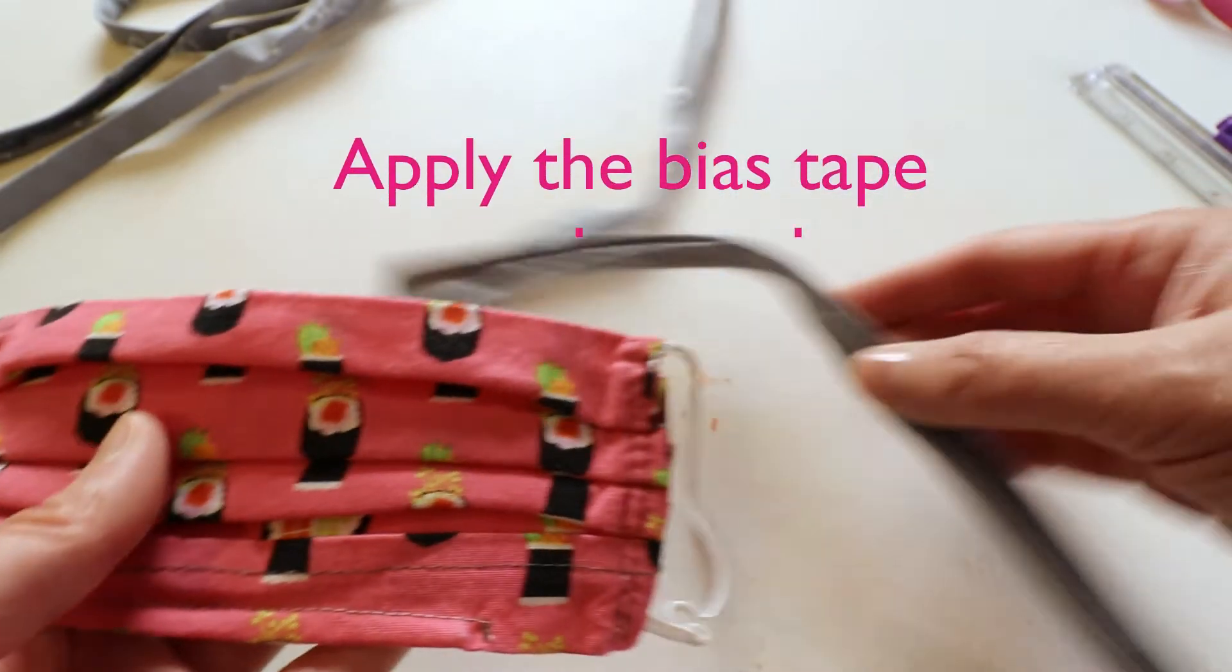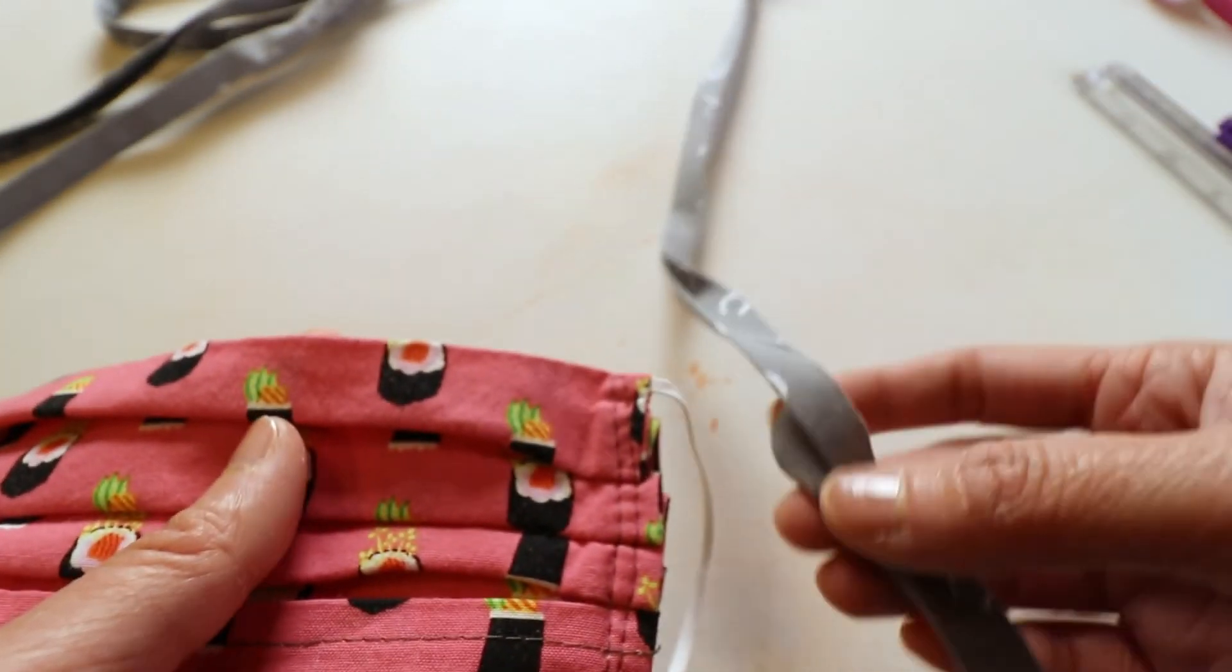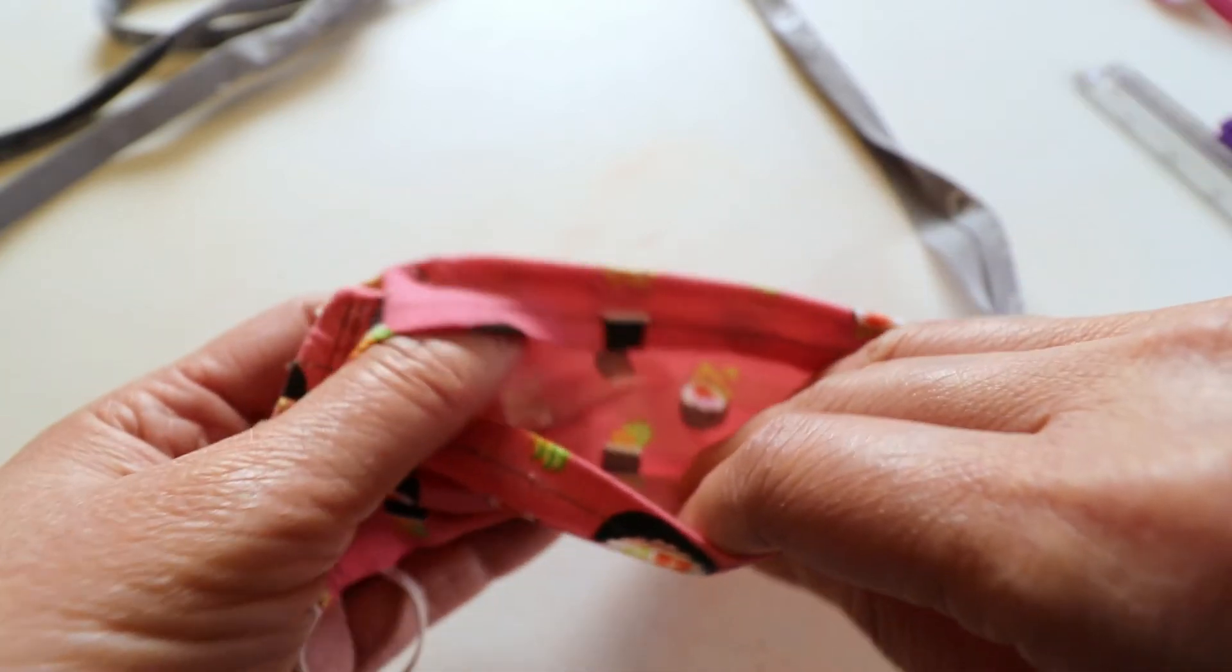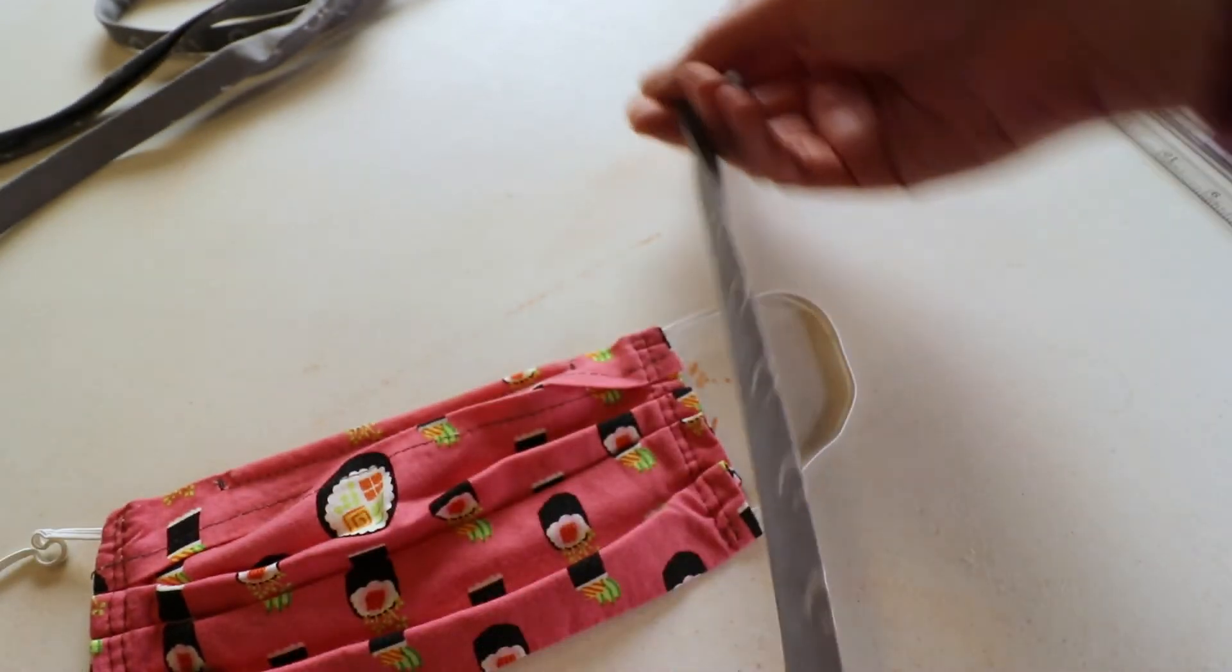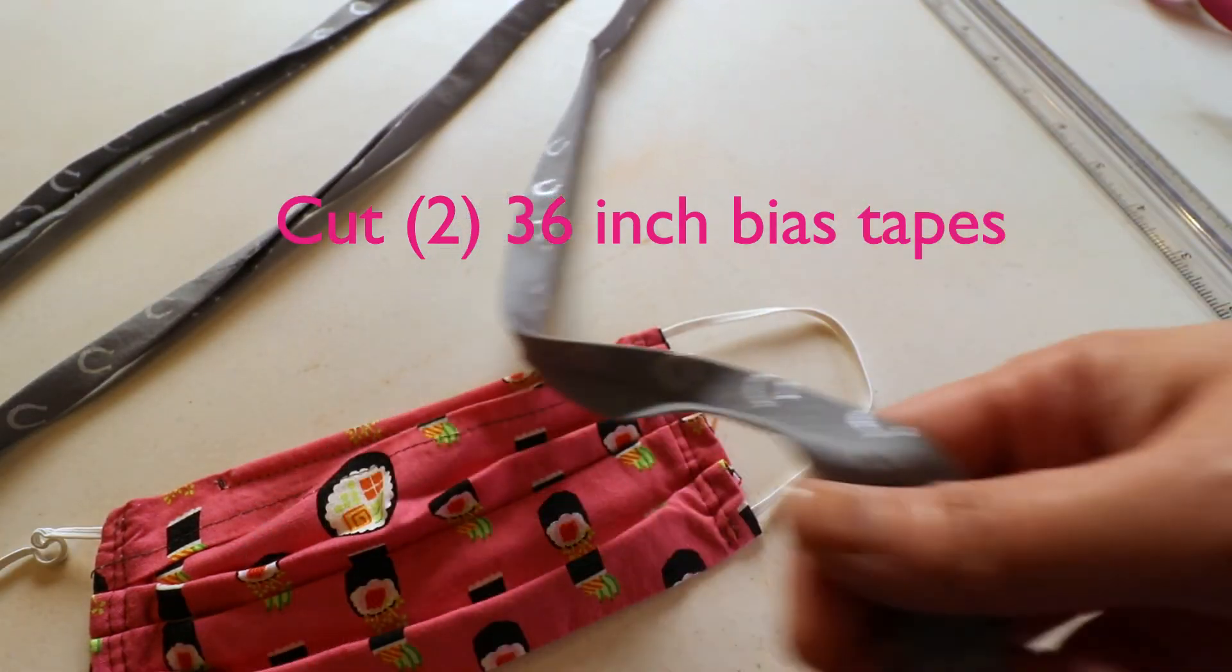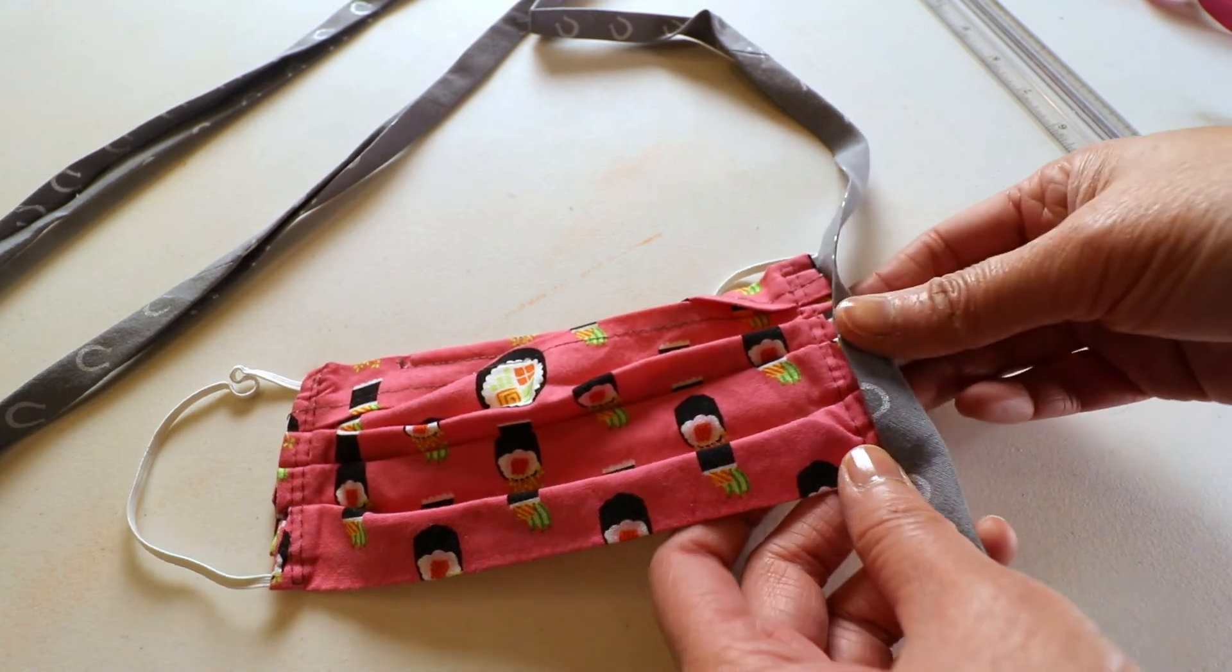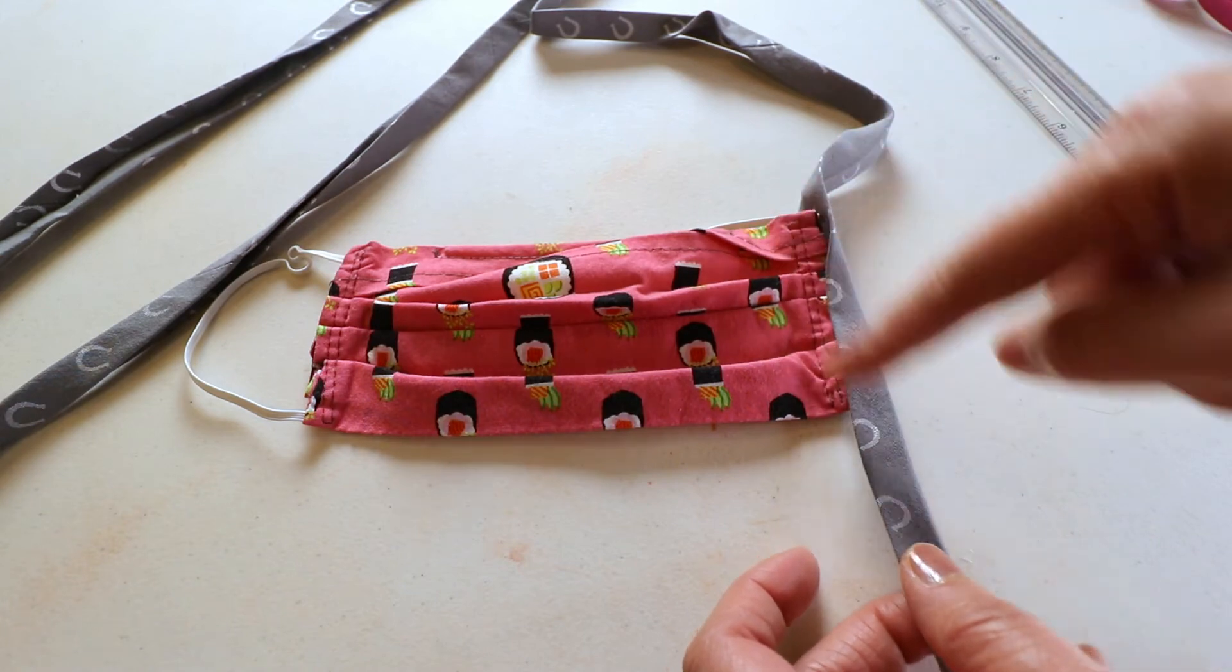So how do we use a bias tape for our mask pattern? We can use this to replace the elastic. All the pattern can stay the same, you still have the nose wire and the pocket for the filter but instead of having the elastic we can cut two long pieces of the bias tape maybe 36 inches or longer. After everything is done we can just place the bias tape, make sure the center aligns to the center of the mask and we can just sew a line from the top all the way down.